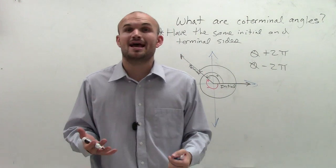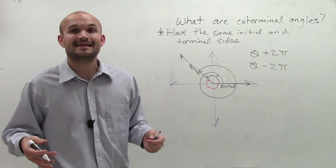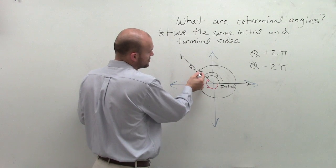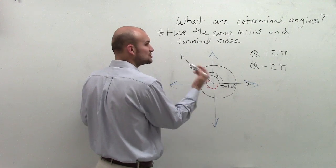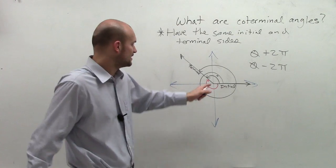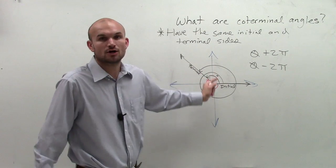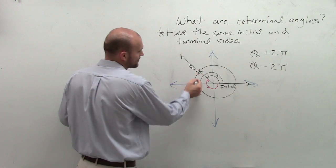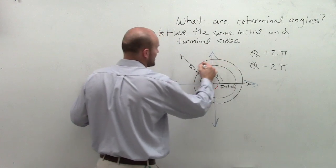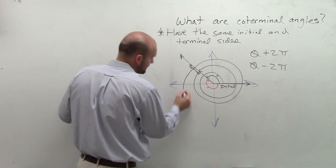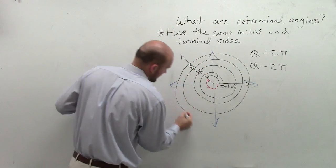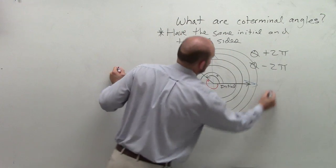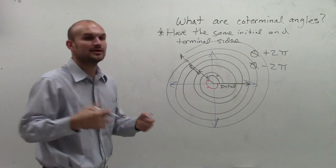Sometimes you might have an angle that is already larger than 2π. It's important to know that coterminal angles don't just stop — there aren't only two of them. Because you can keep on going around: add 2π again, add 2π again, add 2π again.